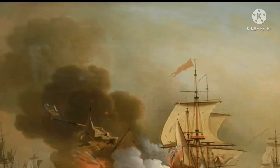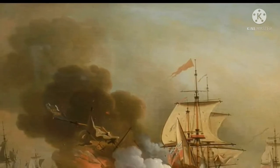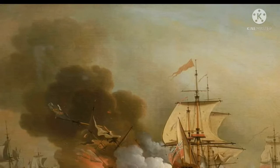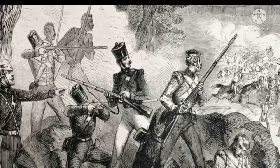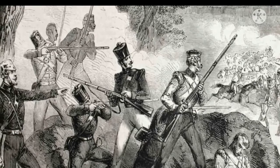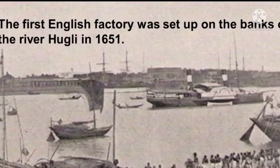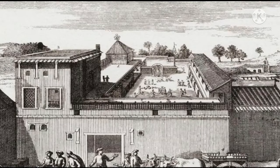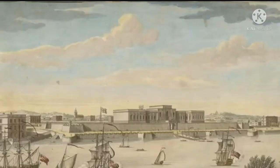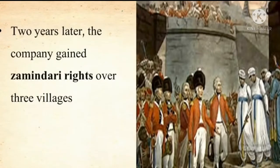So what did they do? They sank each other's ships, blockaded roads, and prevented rival ships from moving with supplies of goods. The desire to secure markets led to fierce battles between the trading companies. The first English factory was set up on the banks of the River Hugli in 1651. The factory had a warehouse where goods for export were stored. In 1696, the company built a fort around the settlement. Two years later, the company gained zamindari rights over three villages.